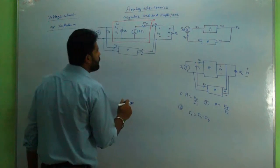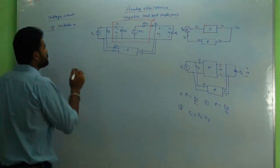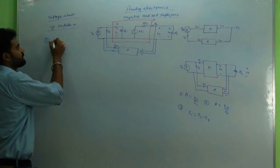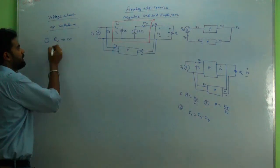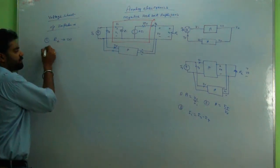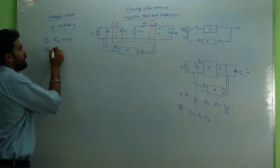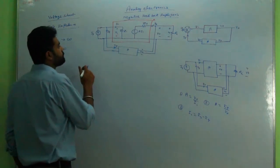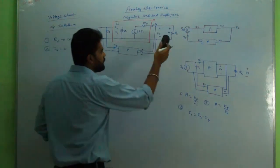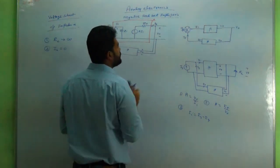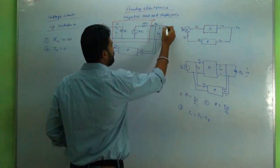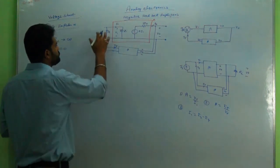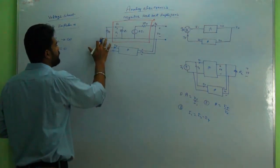We are considering output impedance, so two conditions have to be met. The first condition is RL has to be made infinity — the reasons have already been discussed. The second condition is IS has to be made zero. So RL is made infinity and IS is made zero, meaning no current is flowing from the source.